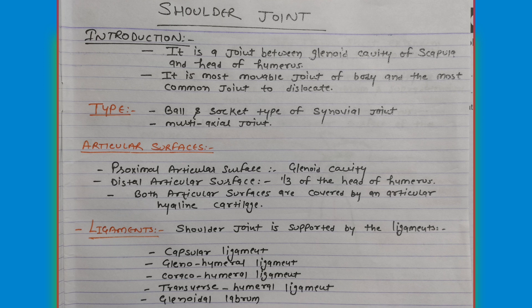Next comes the ligaments. We have to write only the names, and we will discuss the capsular ligament in detail. The ligaments are: the capsular ligament, the glenohumeral ligament, the coracohumeral ligament, the transverse humeral ligament, and the glenoid labrum.